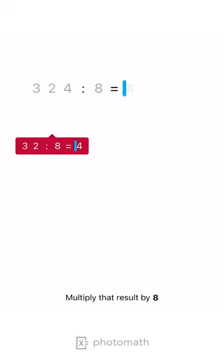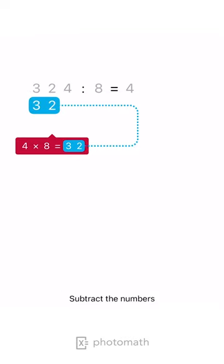Multiply that result by 8. Write the product under the number we initially divided. Subtract the numbers.